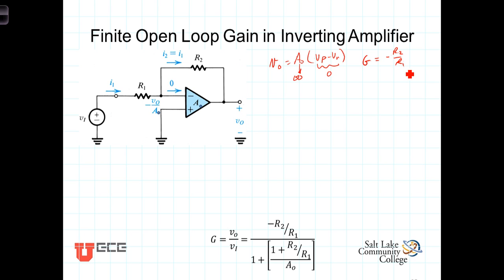But in this video, we're going to look at the effect of a finite A0. In other words, Vout will in fact equal this A0 times Vp minus V sub N, but V sub P is grounded, so V0 is going to equal A0 times zero minus V sub N, so we'll just have a minus V sub N.